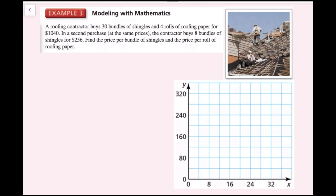For example 3, a roofing contractor buys 30 bundles of shingles and 4 rolls of roofing paper for $1,040. In a second purchase at the same prices, the contractor buys 8 bundles of shingles for $256. We need to find the price per bundle of shingles and the price per roll of roofing paper. These are our two variables: I'll call the price per bundle of shingles x, and the price per roll of roofing paper y.